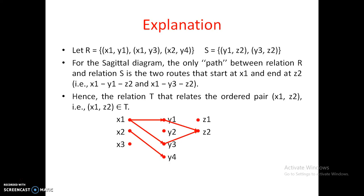And suppose S is one more relation from universe Y to universe Z, containing pairs like y1-z2 and y3-z2. Using a sagittal diagram: in capital X there are three elements x1, x2, x3; in capital Y there are four elements y1, y2, y3, y4; and in capital Z there are two elements z1 and z2. Arrow marks show x1→y1, x1→y3, and x2→y4, forming relation R.